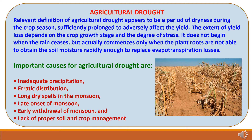A relevant definition of agricultural drought is a period of dryness during the crop season sufficiently prolonged to adversely affect the yield. The extent of yield loss depends on crop growth stages and the degree of stress. It does not begin when rain ceases, but commences only when plant roots are not able to obtain soil moisture rapidly enough to replace evapotranspiration losses. Important causes for agricultural drought are: 1. inadequate precipitation, 2. erratic distribution of rainfall, 3. long dry spells in the monsoon season, 4. late onset of monsoon, 5. early withdrawal of monsoon, and 6. lack of proper soil and crop management.